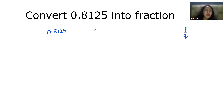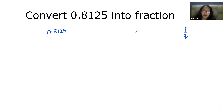So we have to convert decimal into fraction. If you want to know about what is decimal and what is fraction in detail, you can check the description box — there is a link to a detailed video on fraction and decimal. So let's solve this. 0.8125: first we have to multiply in numerator and in denominator.